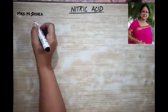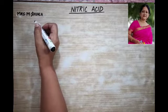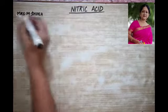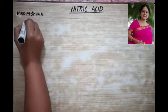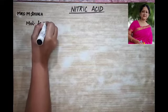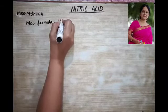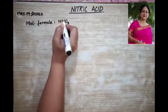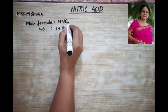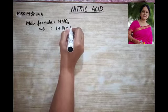Good evening children. Today in chemistry we are going to begin with a new chapter: nitric acid. The molecular formula of nitric acid is HNO3. The molecular weight of HNO3 is calculated as: hydrogen is 1, plus nitrogen is 14, plus 3 times oxygen which is 48, giving a total of 63 amu.